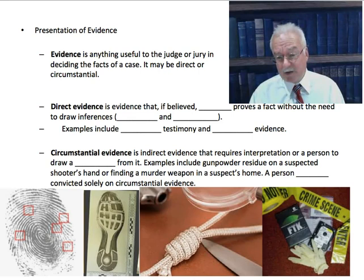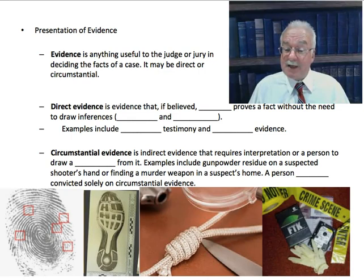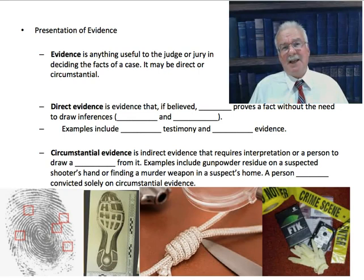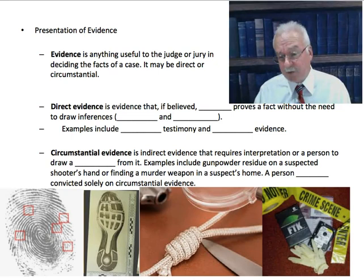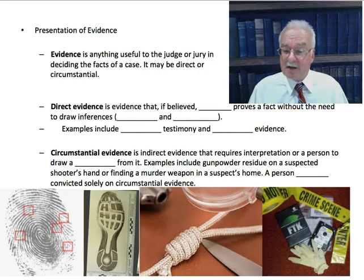Circumstantial evidence is indirect evidence that requires interpretation or drawing a conclusion. Examples include gunpowder residue on a suspected shooter's hand or finding a murder weapon in a suspect's home. A person can be convicted solely on circumstantial evidence, but you must draw an inference. For instance, gunpowder residue on someone's hand is not direct evidence — theoretically they might have fired a gun earlier and the residue is still there. So that kind of evidence is indirect; you have to draw a conclusion from it.